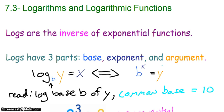If there is not a base written, it's understood that it's 10. Sort of like the square root, it's understood as a square root if there's not a number outside of it. Similar idea.